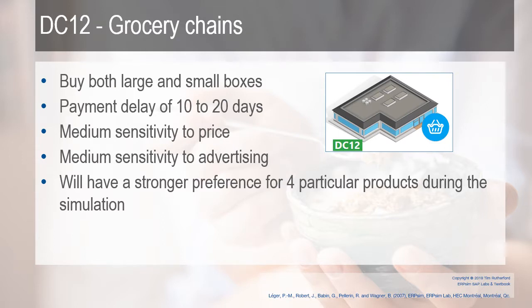The next distribution channel is DC 12 — grocery chains. They buy both the large and the small boxes. This is a fairly typical grocery store, like Kroger's, Pick and Save, Safeway, or Winn-Dixie. There's a payment delay of 10 to 20 days depending on the actual customer. They're moderately sensitive to both price and advertising — right in the middle. They have a strong preference for four particular products throughout the simulation.